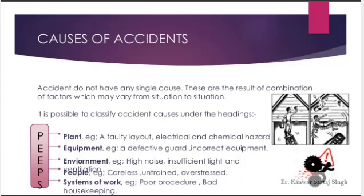Now we will study some causes of accidents. Accidents do not have any single cause; they are the result of a combination of factors which may vary from situation to situation. It is possible to classify accident causes under the headings of plant, equipment, environment, people, and systems of work. For plant, examples include a faulty layout and electrical and chemical hazards, where overall layout can be faulty, proper distancing is not maintained, and electrical and chemical processes are more exposed.